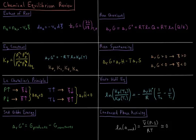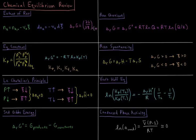We define the Gibbs energy of reaction as the partial derivative of the Gibbs energy with respect to the extent of the reaction, where the extent of reaction that we observe is such that we are going to minimize the Gibbs energy, as would be true of any process that occurs at constant temperature and constant pressure.